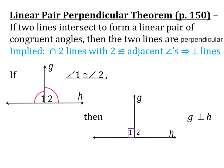Next, let's take a look at the Linear Pair Perpendicular Theorem: if two lines intersect to form a linear pair of congruent angles, then the two lines are perpendicular. The implied shorthand: intersecting two lines with two congruent adjacent angles implies perpendicular lines. So in our illustration, if we have lines G and H intersecting, and we know angle 1 is congruent to angle 2 because the arc marks match, then line G is perpendicular to line H.